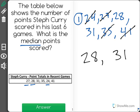If I had one number, that would be my median. But with two, I need to find the average of those two.